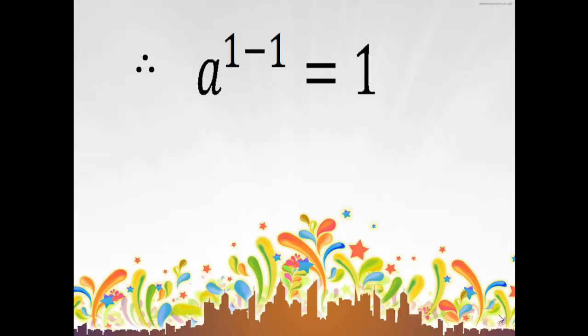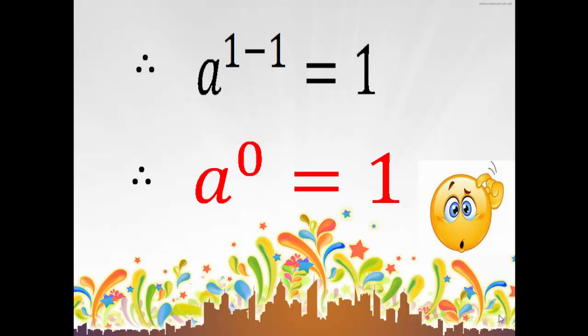That is A raise to 1 minus 1, that is equal to 1. Lastly, the answer of the question is A raise to 0 is equal to 1. 1 minus 1, answer we get 0. So what we have to prove, we have proved over here that A raise to 0 is equal to 1. Thanks for watching.